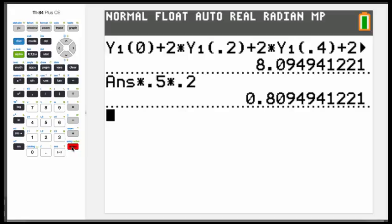So in the end, for our answer, we have an approximation of 0.809 for the area under the curve.